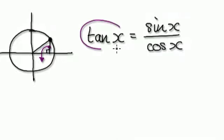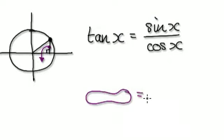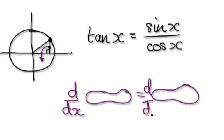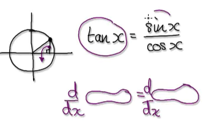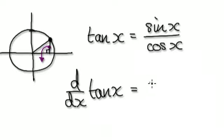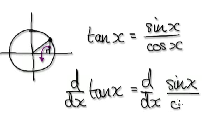At the moment, you've got tan of x equals sine of x over cos of x. Whenever you have an equation where one side equals another side, you can add equally to both sides, take away equally from both sides, multiply equally to both sides, divide equally to both sides. Now you can also take the derivative equally to both sides. So given that this equals this, you're allowed to take the derivative on the left-hand side and the derivative on the right-hand side — of sine of x over cos of x.